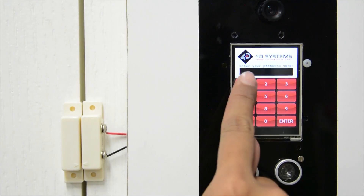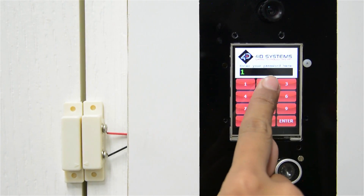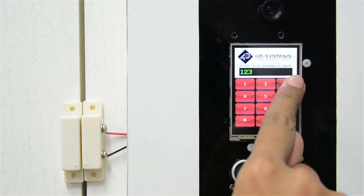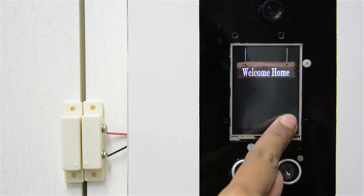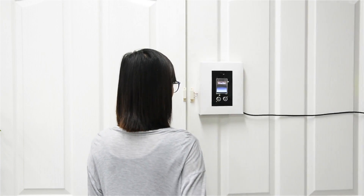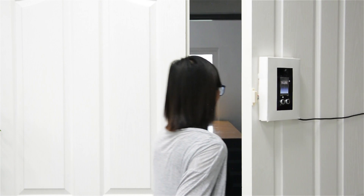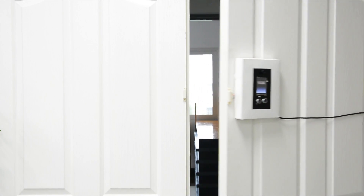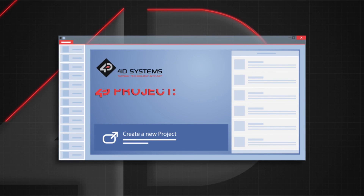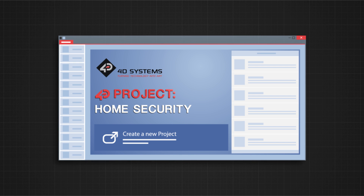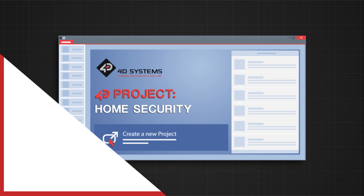You can make your own home security device using the FORDWINO24. To start with, you will need the following components.